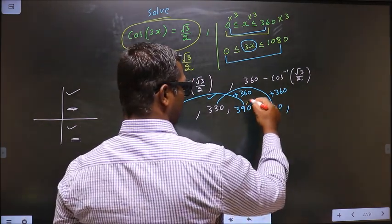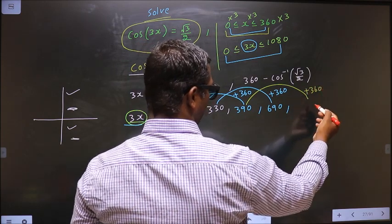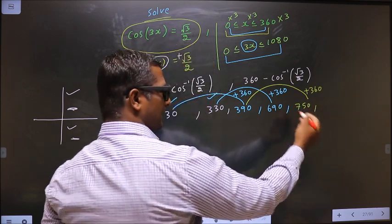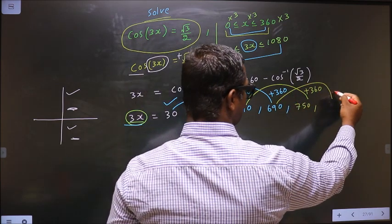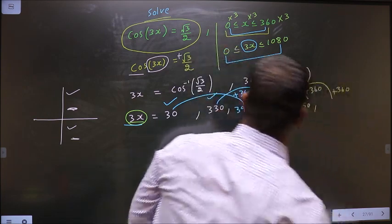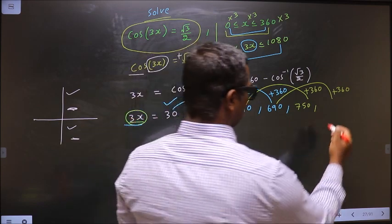Now to get another value, you add 360 to this. You get 750. Now to get another value you add 360 to this. You get 1050.